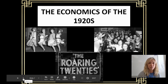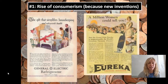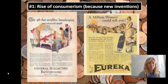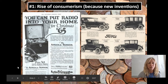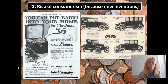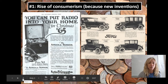There are four main things I want you to walk away understanding, and that's what the Ed Puzzle question is going to be on. Number one: there's a rise of consumerism — people are buying a lot of things. In this case, they're buying a lot of new inventions. Everybody wants to get a refrigerator, a vacuum cleaner, household appliances. People are also buying radios and cars.